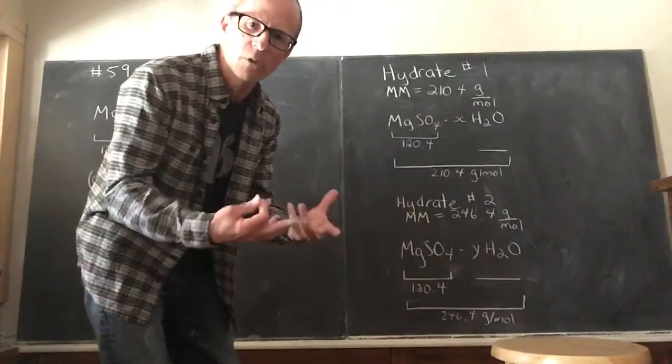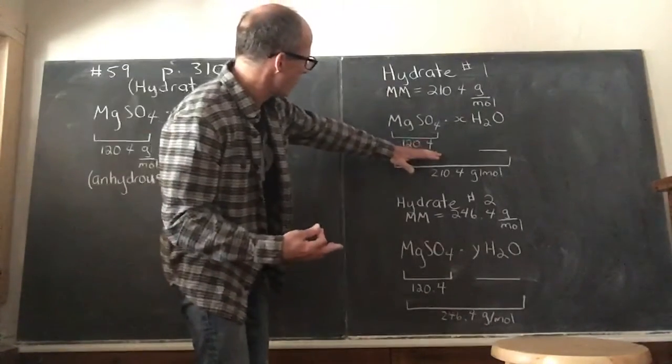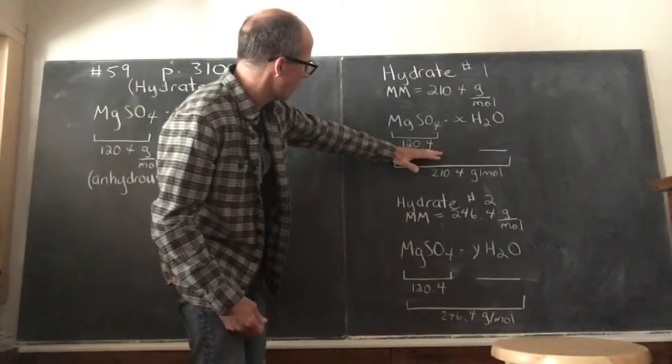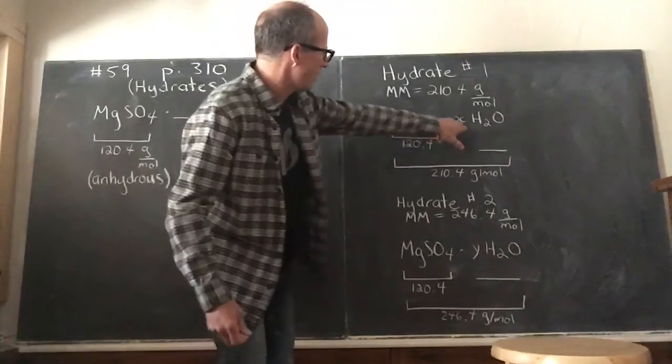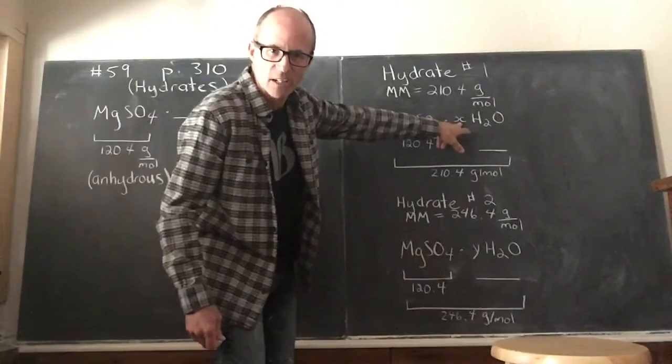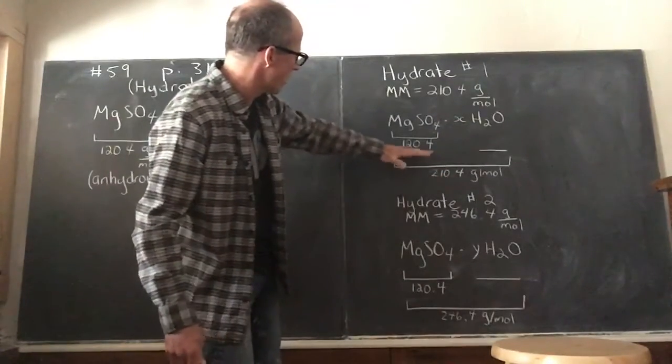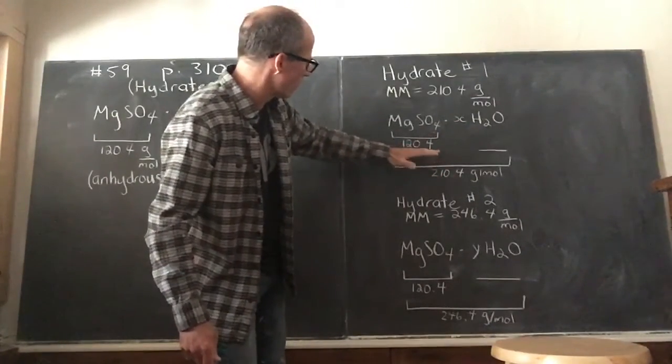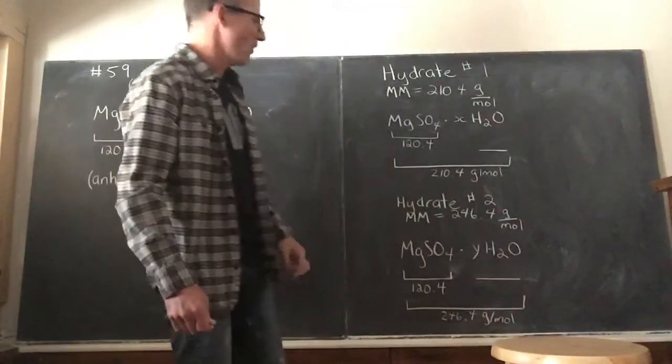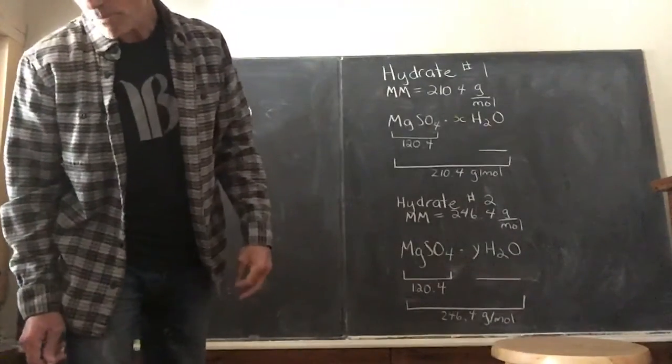So I drew a couple little pictures to help you visualize what's really going on here. So what we've got is the anhydrous portion of the magnesium sulfate, and hydrate one is 120.4, and I'm going to call this variable X. This is the first hydrate; this will tell us what kind of hydrate we have.